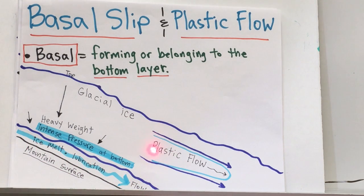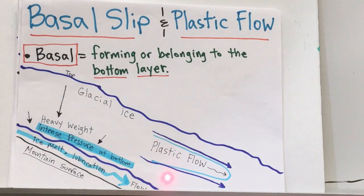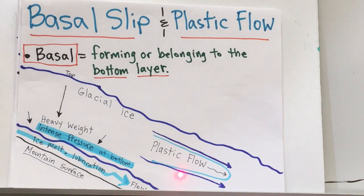Plastic flow typically happens at the middle of the glacier. Plastic flow is the deformation of ice crystals as the heavy weight and pressure push the ice downhill.